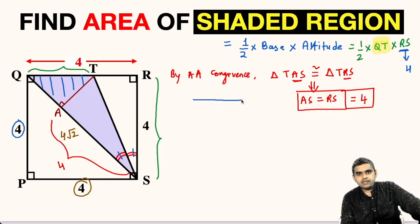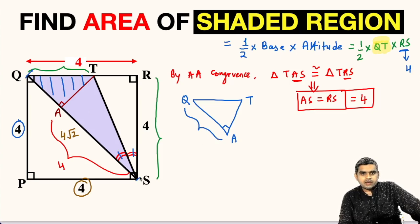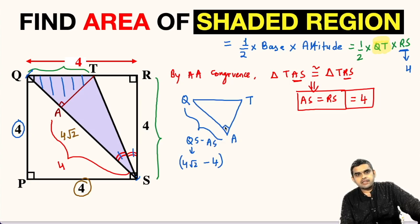Drawing triangle QAT separately: the perpendicular is at A, with points T, Q, and A. QA equals QS minus AS, so QA = 4√2 − 4. QS is the diagonal of the square, so angle Q measures 45 degrees — this is a property of a square.